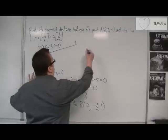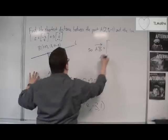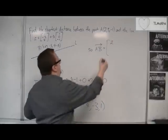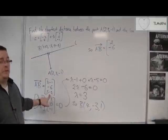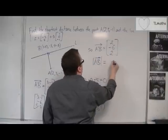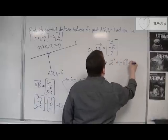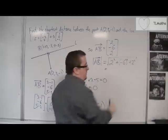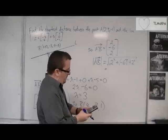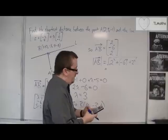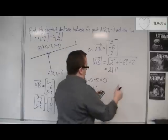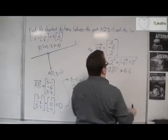Vector AB, with lambda equal to 3, is (2, -6, 2). So the length of AB is the square root of 2 squared plus 6 squared plus 2 squared, which equals 2 root 11, approximately 6.6 units.